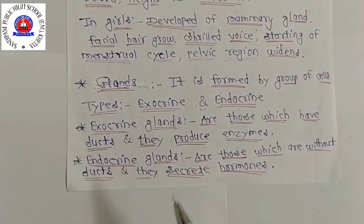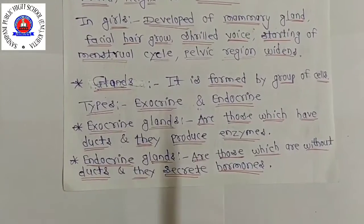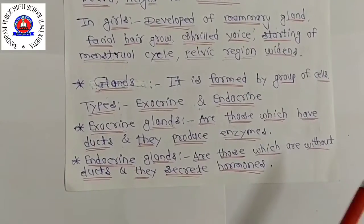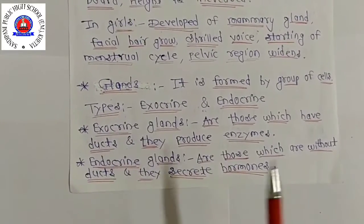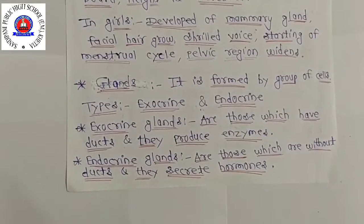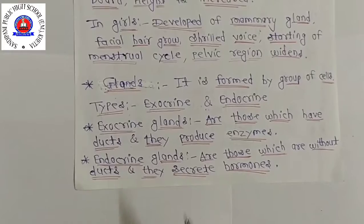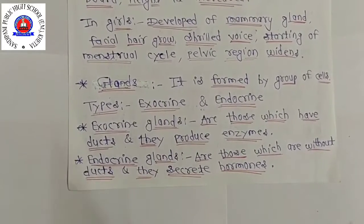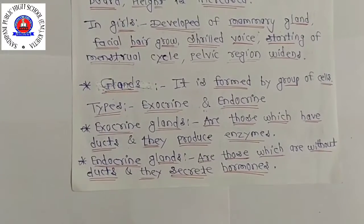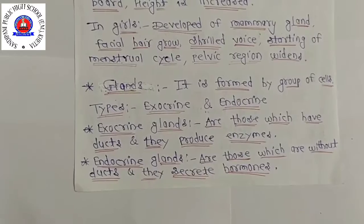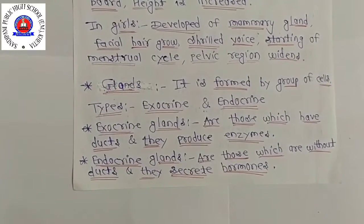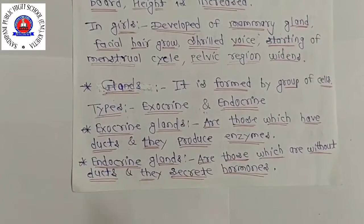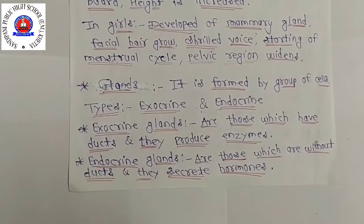Hormones are produced in one part of the body but act on some other parts of the body. They perform different types and functions. Some glands in our body have both exocrine and endocrine functions — for example, the pancreas, testes, and ovaries perform both exocrine and endocrine functions.